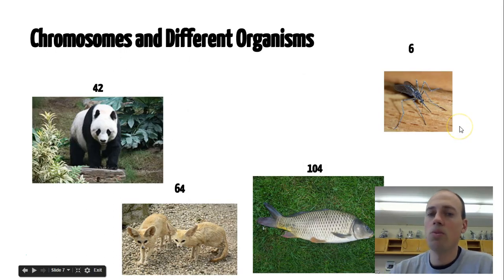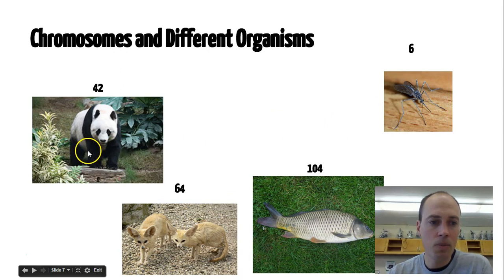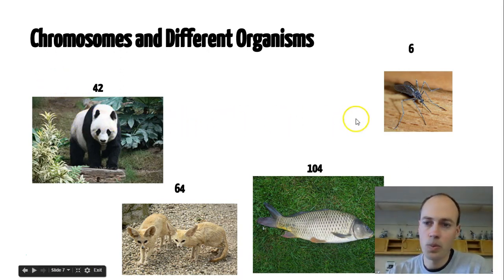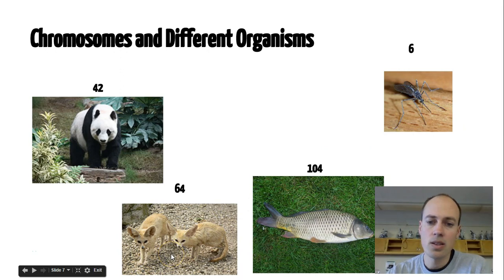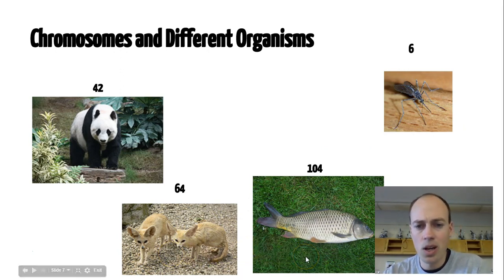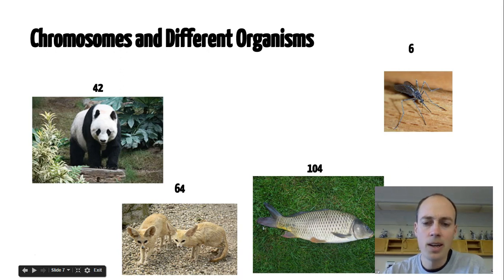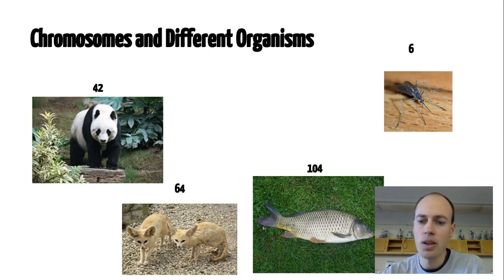We have 46 chromosomes, but other organisms probably don't. Here is a list of some other animals that have different numbers of chromosomes than we do. The panda has 42, we have 46, the mosquito has 6 chromosomes, this fennec fox has 64, and this fish happens to have 104. Now, does that mean that fish are more complex and have more genetic information? No. The number of chromosomes is seemingly random, but clearly we are more complex than a lot of other organisms and operate quite a bit differently.